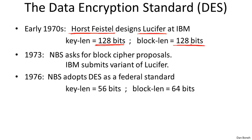In 1973, the government realized it was buying many commercial off-the-shelf computers, and wanted its suppliers to have a good crypto algorithm for products sold to the government. So the National Bureau of Standards put out a request for proposals for a block cipher to become a federal standard. IBM submitted a variant of Lucifer, which went through modifications during the standardization process, and in 1976 the National Bureau of Standards adopted DES as a federal standard.